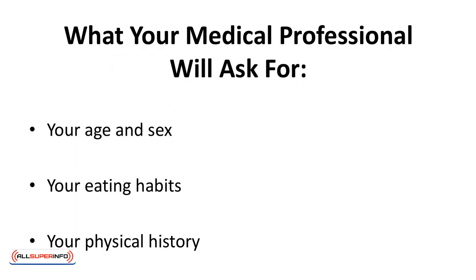Your health professional will usually ask you a series of questions such as your age and sex, your eating habits, and your physical history. They will take your vital signs such as weight, blood pressure, temperature, and may do a test to determine your body fat ratio. For example, if you are a 25-year-old gymnast who has just started weightlifting, it's safe to assume your pain is muscular in origin. But if you are a 56-year-old male who is a heavy smoker and drinker, does little physical work, has a high-stress job, high blood pressure, eats mainly processed foods, and has a family history of heart disease, then your health professional will be looking for a heart-related reason for your pain.